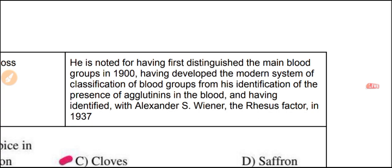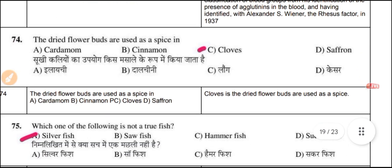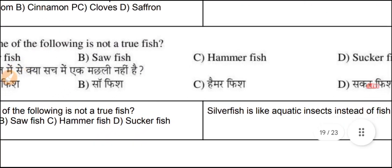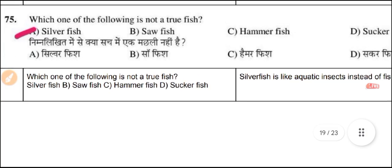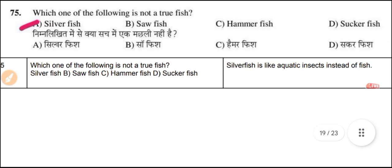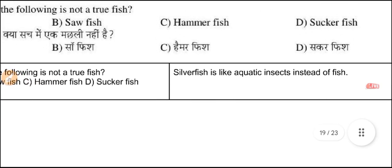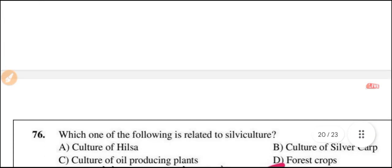Question 74: Dried flower buds are used as a spice — that is cloves. Cloves are dried flower buds used as a spice. Question 75: Which of the following is not a true fish? Silverfish is not a true fish — silverfish is actually an aquatic insect, not a fish.